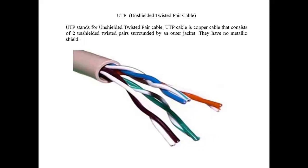Next is UTP, which stands for Unshielded Twisted Pair cable. It is a copper cable that consists of two unshielded twisted pairs surrounded by an outer jacket. There is no metal shield because it is unshielded — if it were the shielded type, there would be a metallic shield outside. As the name implies, twisted pair means it is a combination of two cables twisted upon each other, as shown in the diagram.